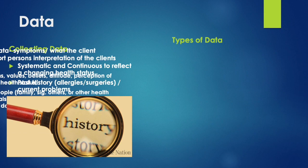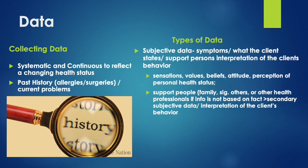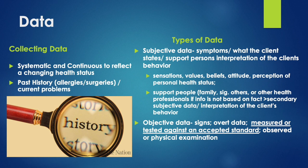There are two types of data: subjective data and objective data. Subjective data is the symptoms — it's what the patient states, and it can also be what the support person interprets, meaning their interpretation of the client's behavior. Objective data are signs; they can be measured or tested against an accepted standard and are observed or collected by physical examination.